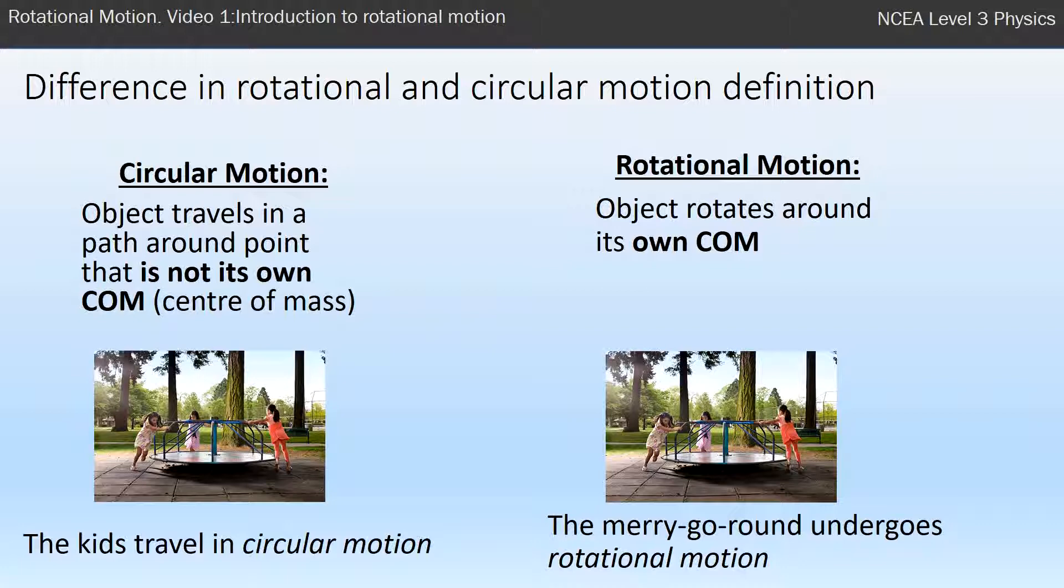So when you get to university physics we start treating these together, circular motion and rotational motion, but it's easier in Level 3 if we think of them as two separate ideas. The kids are traveling around another point whereas the merry-go-round is spinning about a point on its own center of mass.